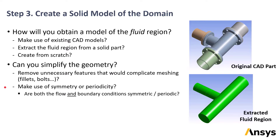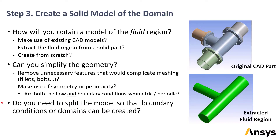Symmetry or periodicity in the solution can allow for smaller models and faster solution times. You need to be sure that not only the geometry is symmetric or periodic, but also that the boundary conditions and the flow are — otherwise an unphysical condition would be imposed on the solution. Finally, sometimes the model might need to be split into more than one piece so that different boundary conditions can be applied, or because more than one cell zone will be needed, for instance if there's a porous region or a rotating part.